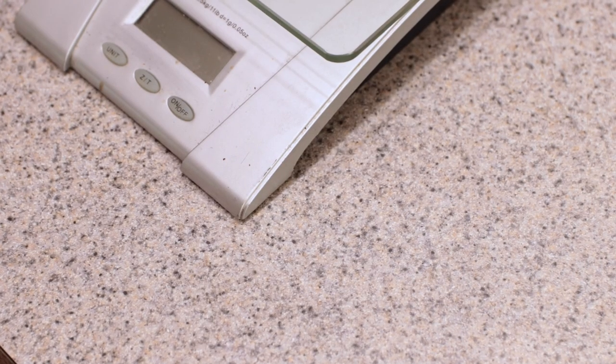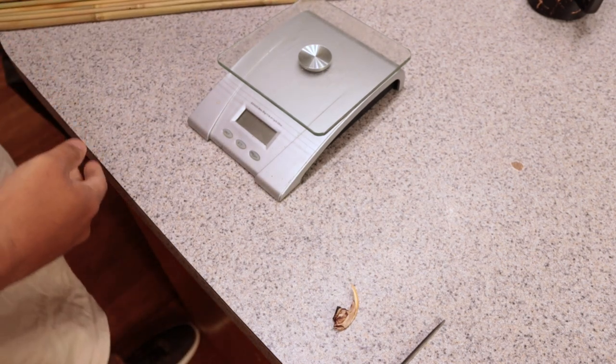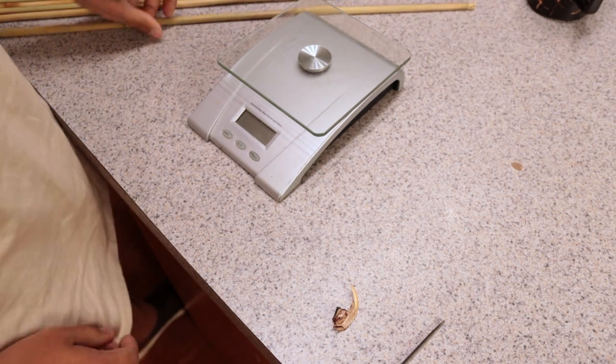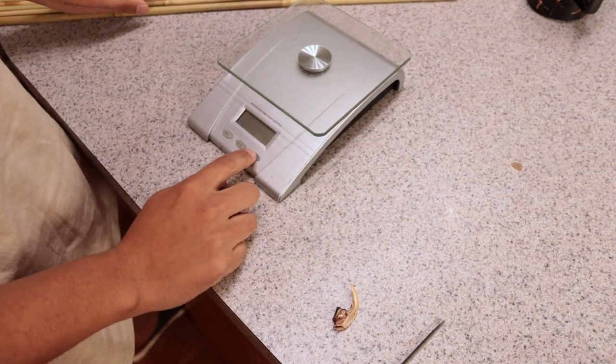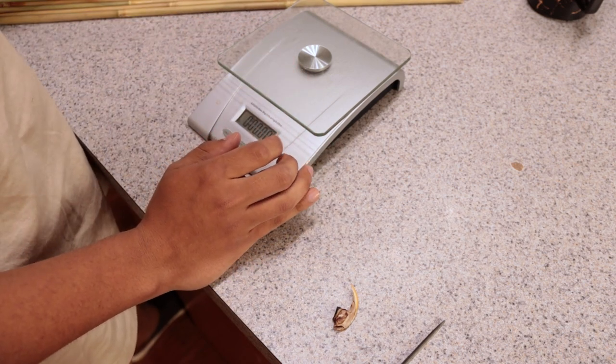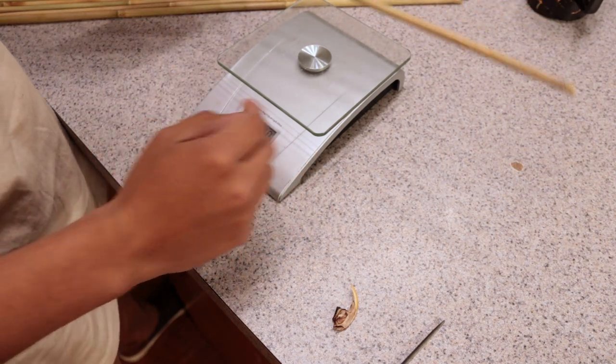But the first thing to do is weigh them. I'm just using a kitchen scale, it works well enough for me. They should all be within a certain range of each other, and I have plenty of river cane so I can afford to sort and match these the way I want to.